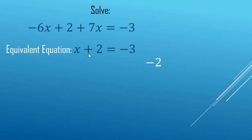So we just have a regular x on the left hand side equals negative 3 minus 2, which makes negative 5.